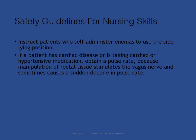Ensuring patient safety is an essential role of the professional nurse. To ensure patient safety, communicate clearly with members of the health care team, assess and incorporate the patient's priorities of care and preferences, and use the best evidence when making decisions about care. Instruct patients who self-administer enemas to use the side-lying position — not to self-administer while sitting on the toilet, as this position results in the rectal tubing causing friction that could injure the rectal wall. If a patient has cardiac disease or is taking cardiac or hypertensive medication, obtain a pulse rate because manipulation of rectal tissue stimulates the vagus nerve and can cause a sudden decline in pulse rate, increasing the patient's risk of fainting while on the bedpan, bedside commode, or toilet.